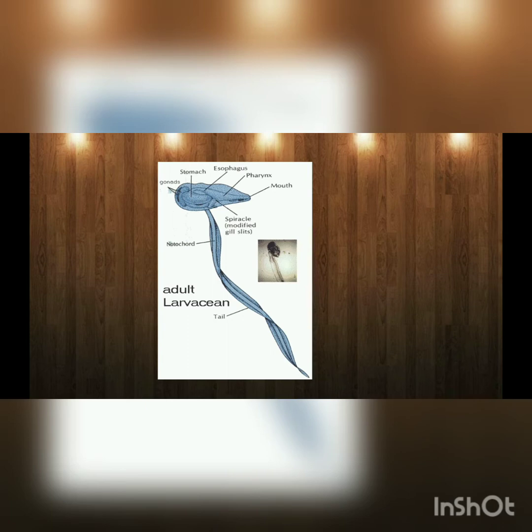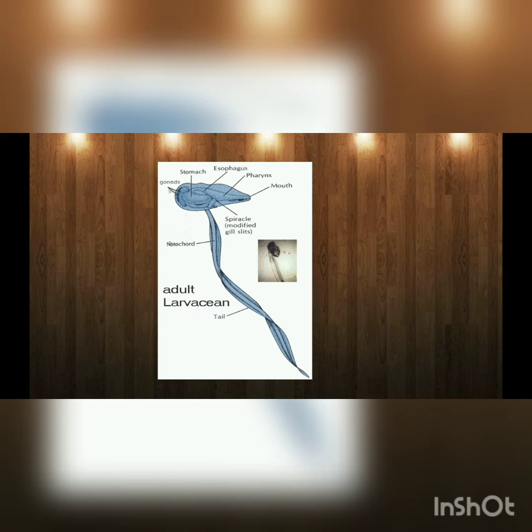Larvaceans undergo incomplete or absent larval metamorphosis, which is the process of transformation from an immature form to an adult form in two or more distinct stages. Class Larvaceae is divided into two orders: Endostylophora and Polystylophora. In the first order, Endostylophora, the house is bilaterally symmetrical with two apertures and the pharynx has an endostyle; for example, Appendicularia. In the second order, Polystylophora, the house is bilaterally symmetrical with a single aperture and the pharynx lacks an endostyle; for example, Kowalevskia. The examples of larvaceans are Appendicularia, Oikopleura, and Kowalevskia.